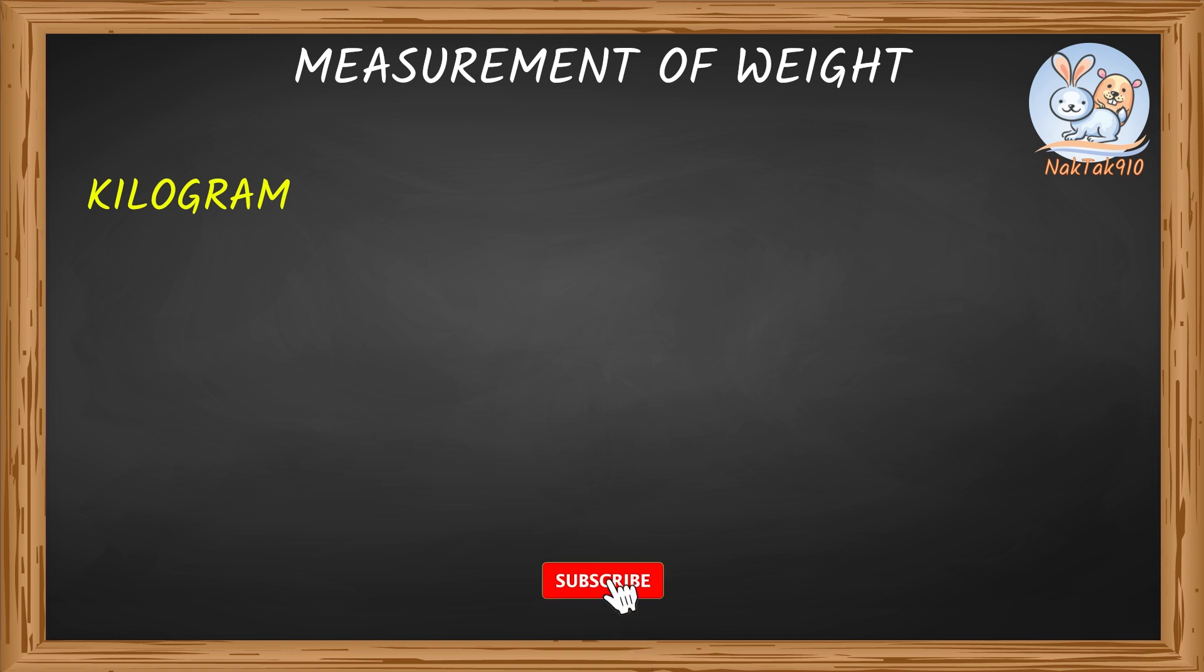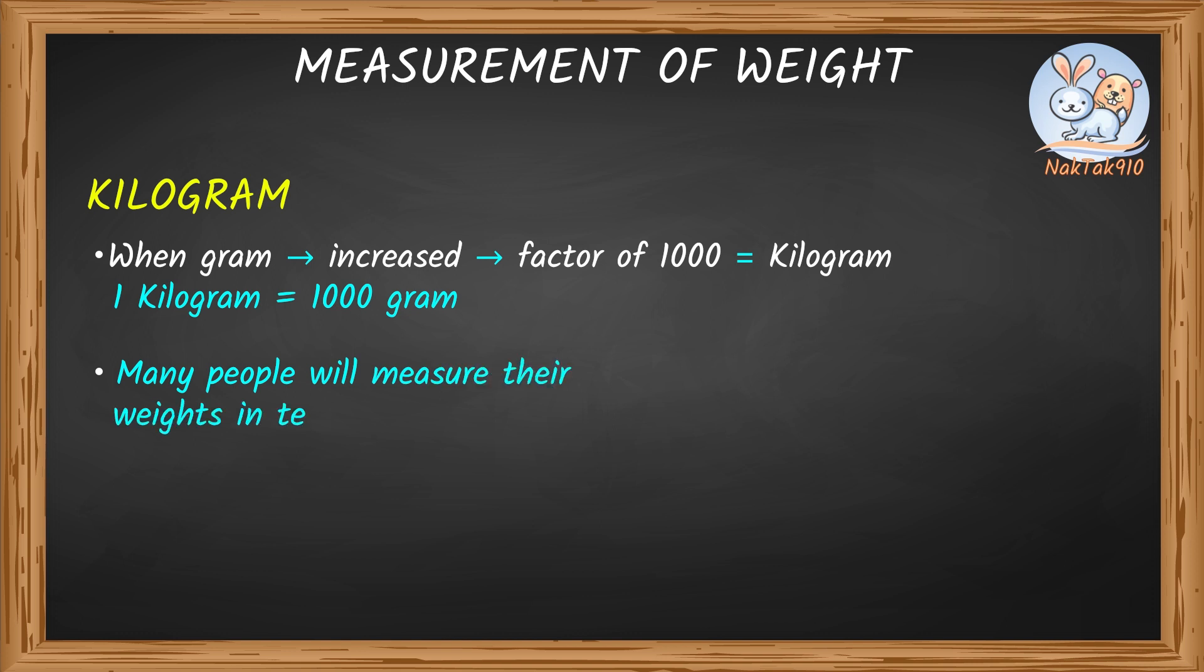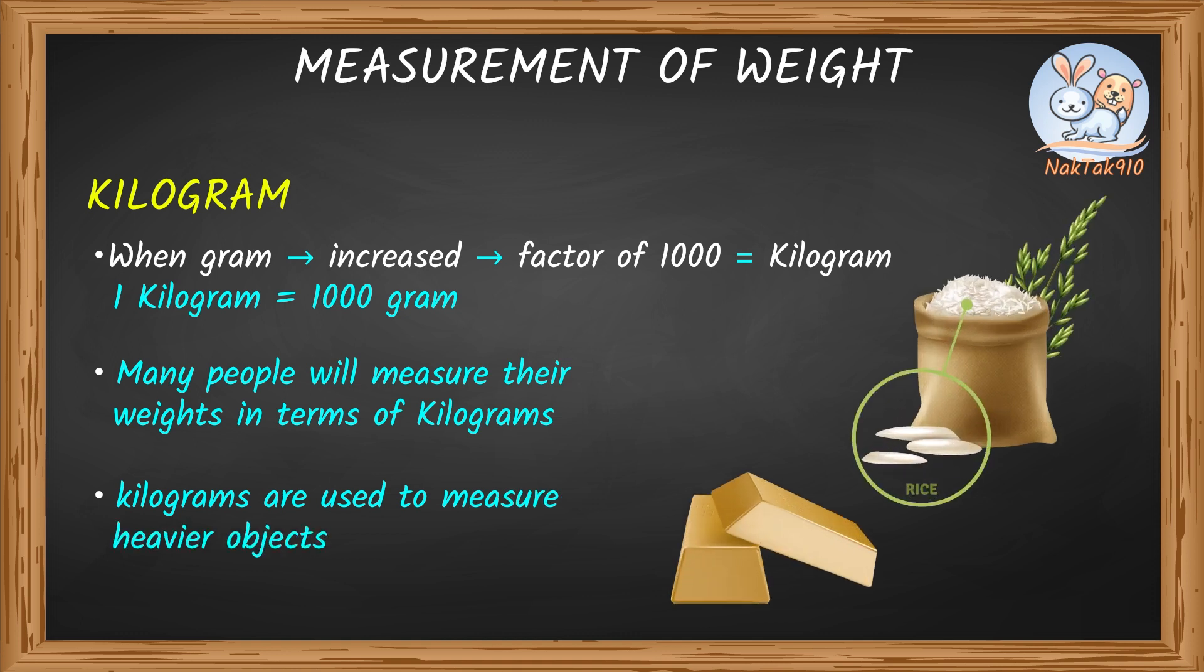Kilogram. When a gram is increased by a factor of 1000, we get a kilogram. One kilogram is equal to 1000 grams. Many people will measure their weights in terms of kilograms. Usually, kilograms are used to measure heavier objects such as big bags of rice, a bar of gold, etc. A kilogram is abbreviated as kg.